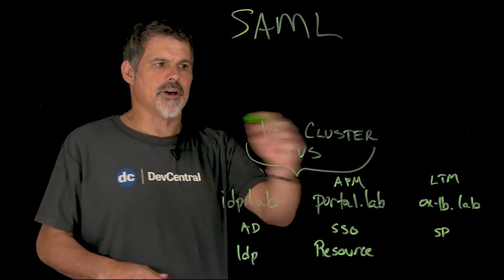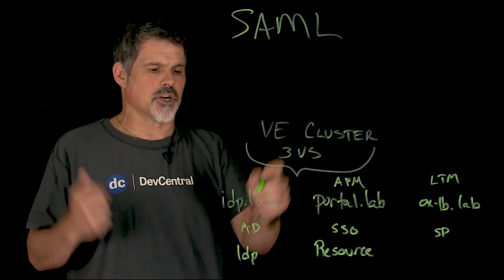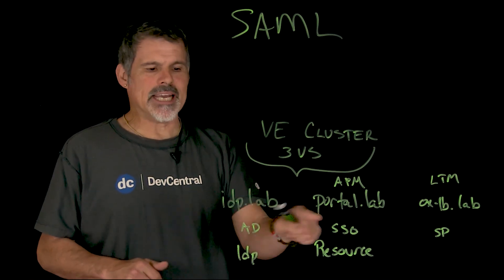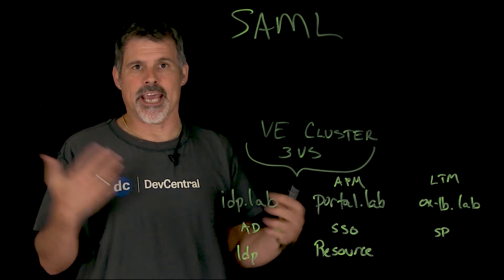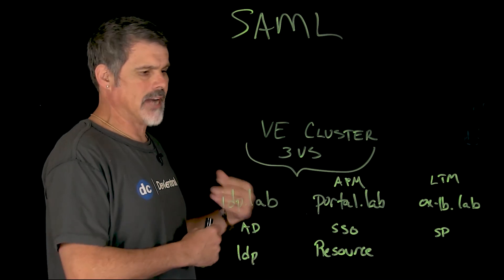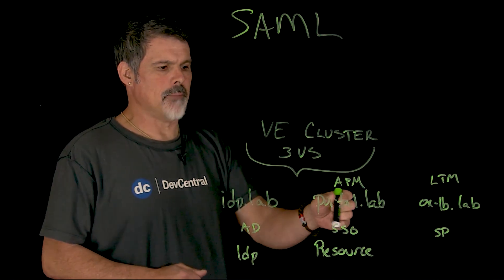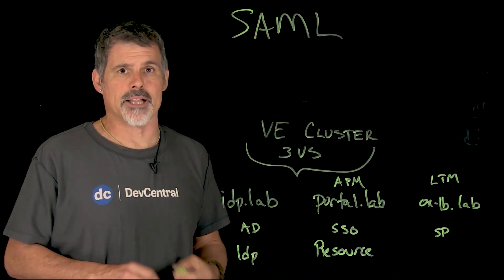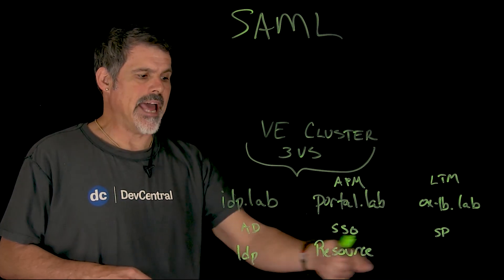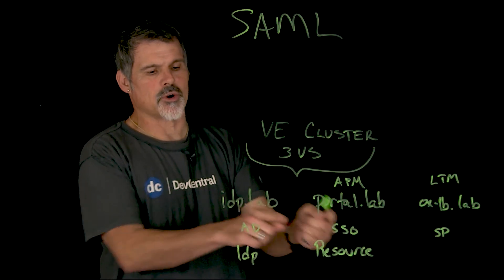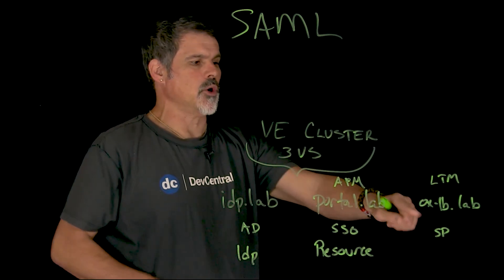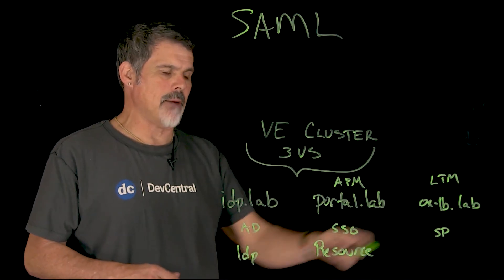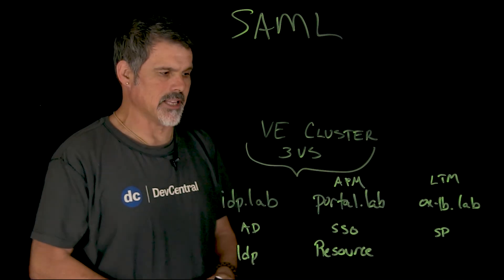What he did is he set up a virtual edition cluster with three virtual servers on the backend. idp.lab is doing the AD authentication — that's the identity provider hitting Active Directory on the backend. portal.lab is the single sign-on resource managed by Access Policy Manager, APM, and that has the resource. When you click on that resource based on your identity, you then go to oxlb.lab, which is the service provider, and LTM is load balancing.